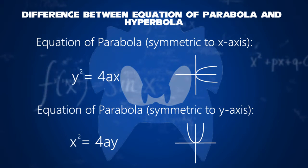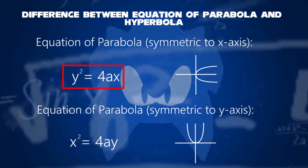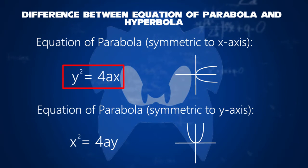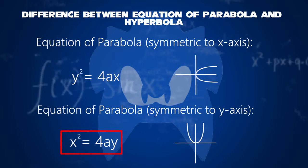In parabola, there are two equations. One which is symmetric to X axis, we say Y squared equals 4AX. If other is symmetric to Y axis, we say X squared equals 4AY.